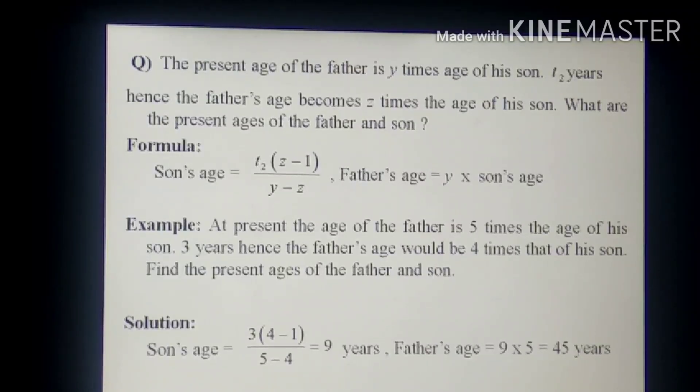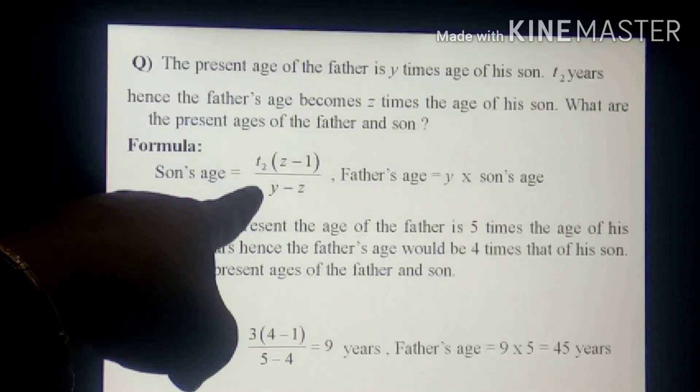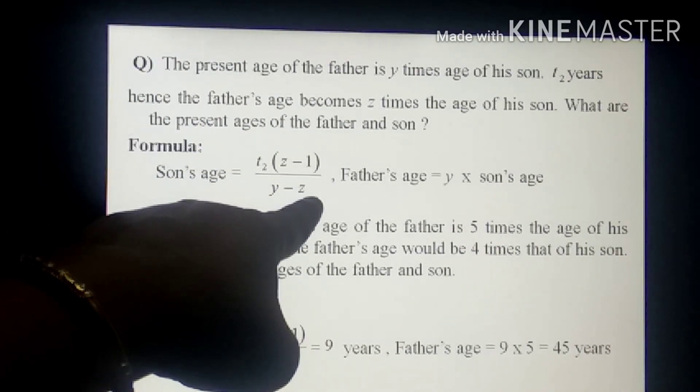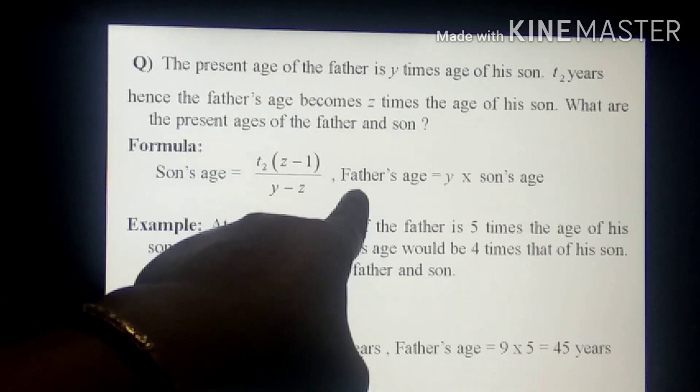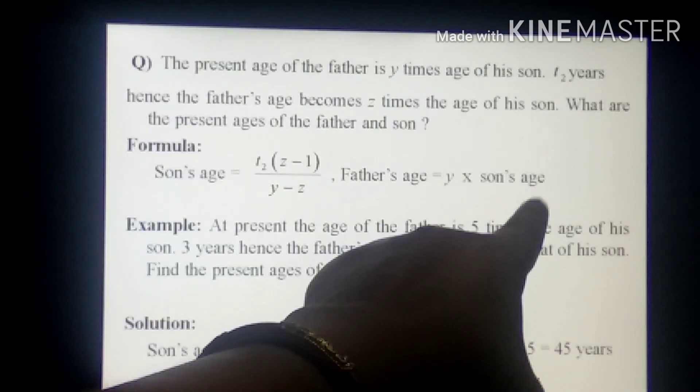So the formula is son's age equals T2(Z-1) divided by (Y-Z) and definitely the father's age is Y times the son's age.